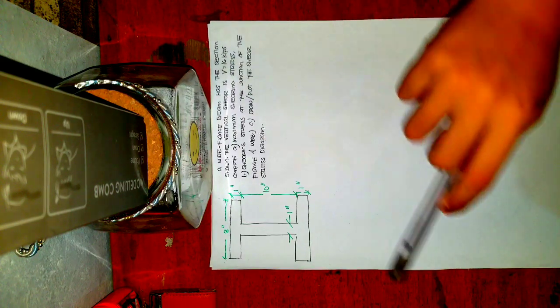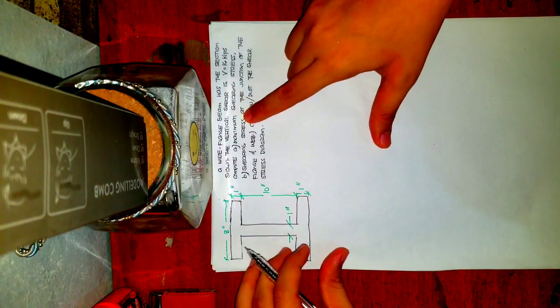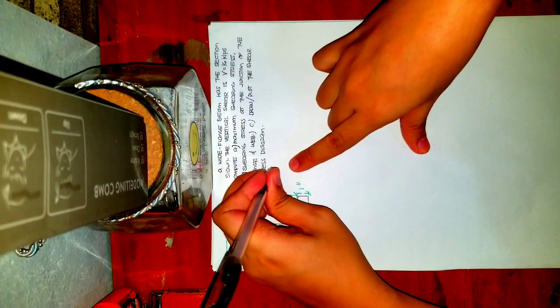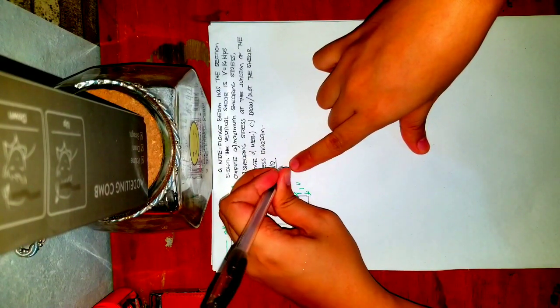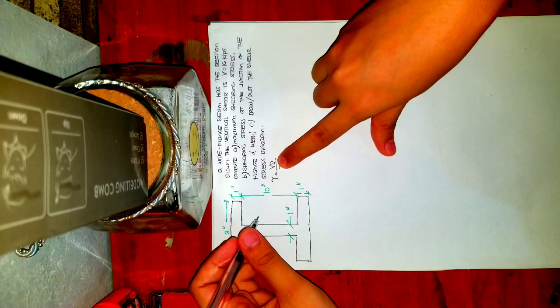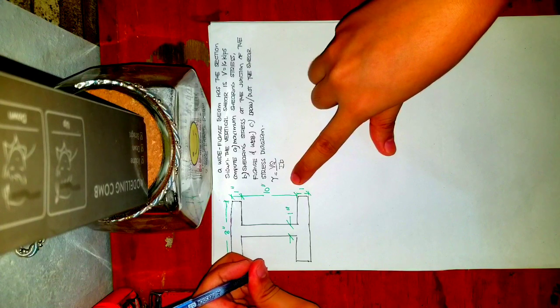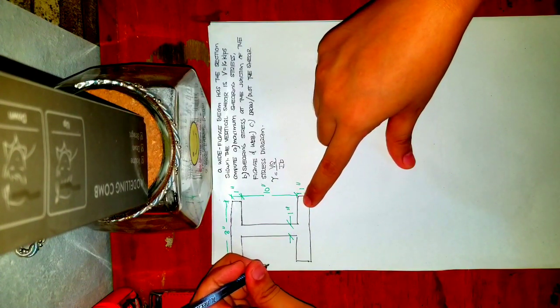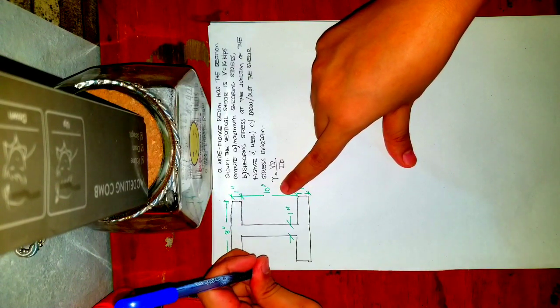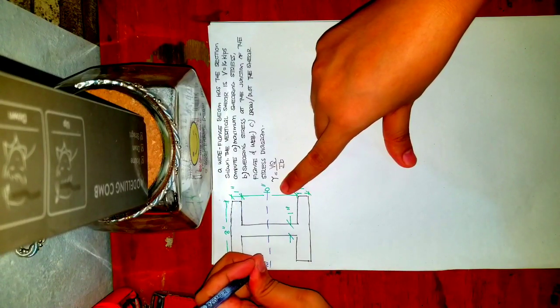So before that, ano muna ang gagawin natin? The shear is given. Let's solve first for letter A. So again, ano nga yung formula natin for shearing stress? It's equal to VQ all over I times B. So V is given as 16 kips, so we need to solve for Q. We need to locate the centroid or the location of the neutral axis. Since it's symmetrical, it's in the middle. This is our neutral axis.